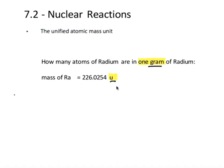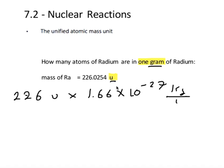So we'll take 226 atomic mass units and we'll multiply it by the conversion 1.66 times 10 to the negative 27 kilograms per atomic mass unit.